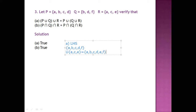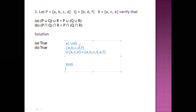Now for the RHS: RHS says take the union of Q and R first, then combine with P. So what is Q union R? Q = {B, D, F} and R = {A, C, E}, giving Q union R = {A, B, C, D, F, E}.